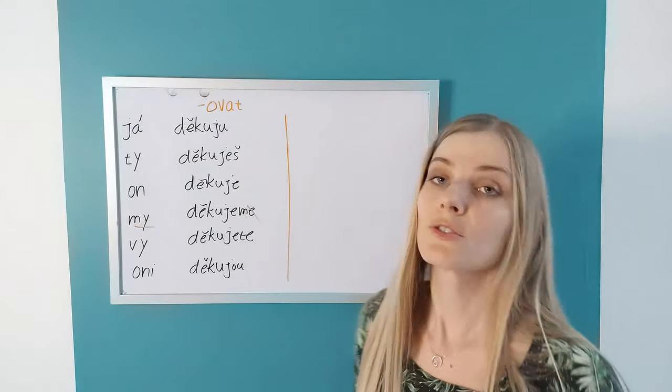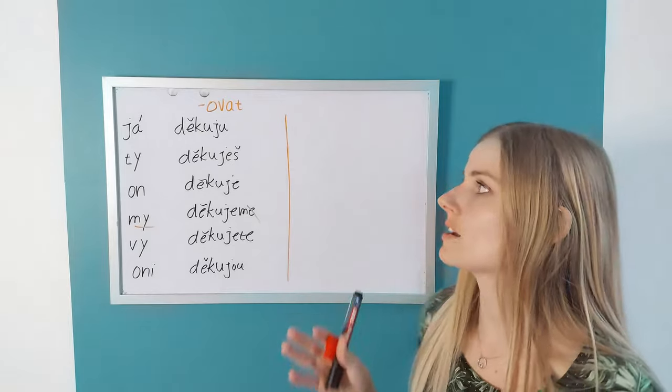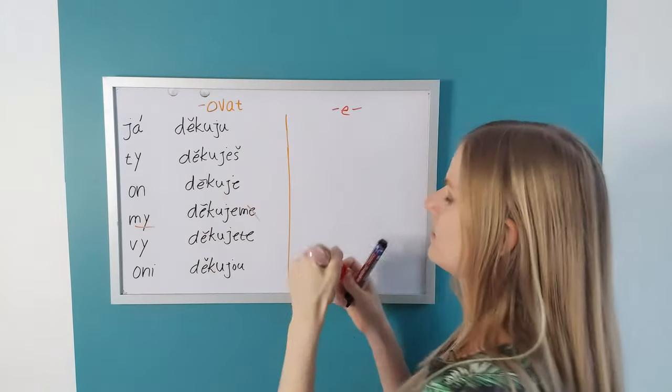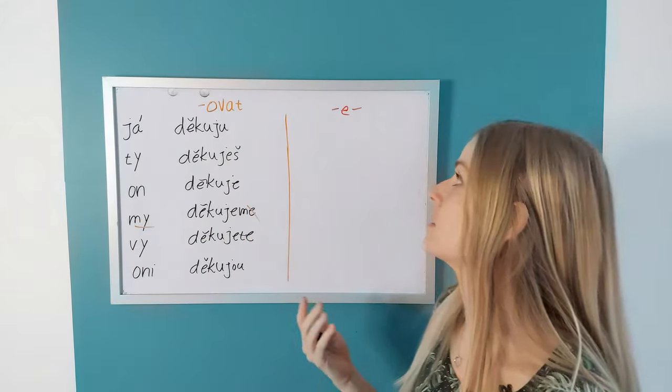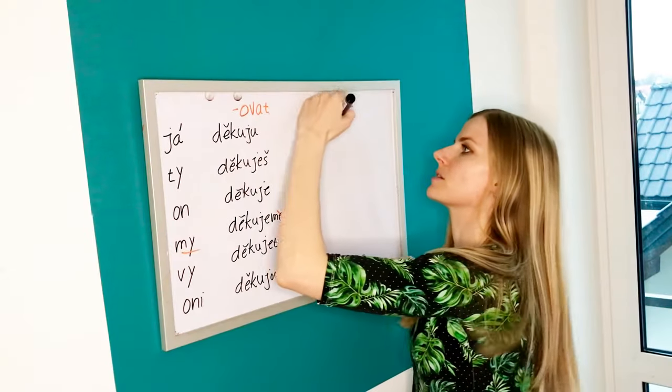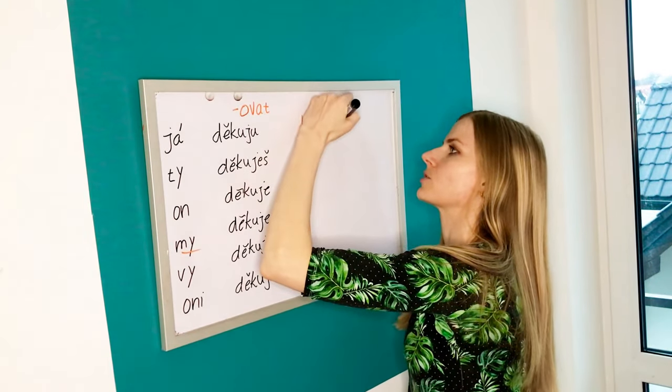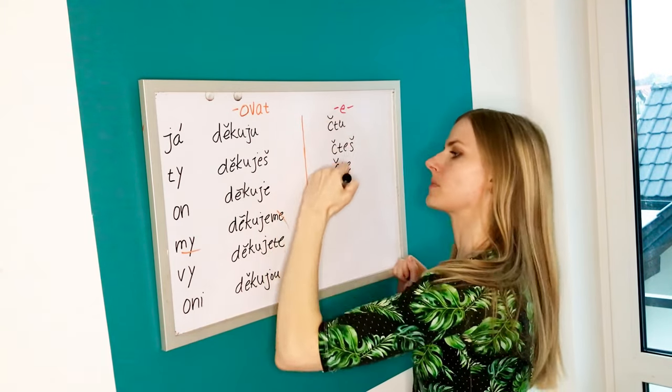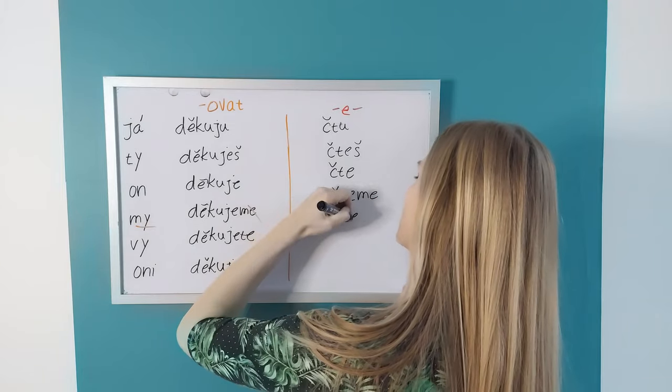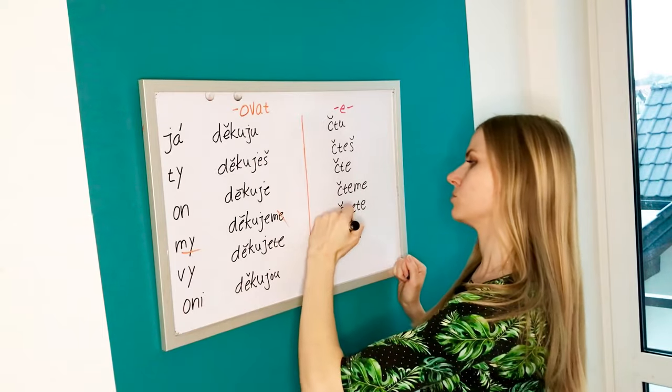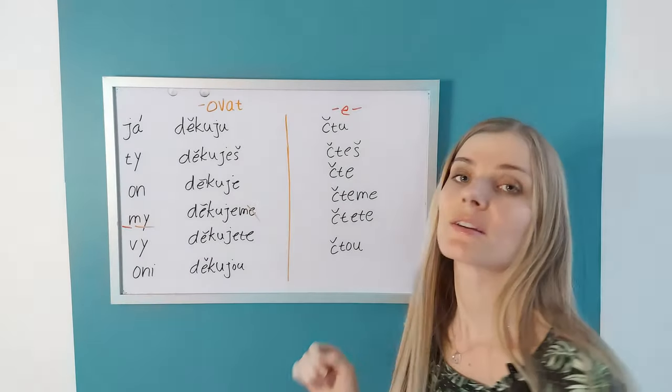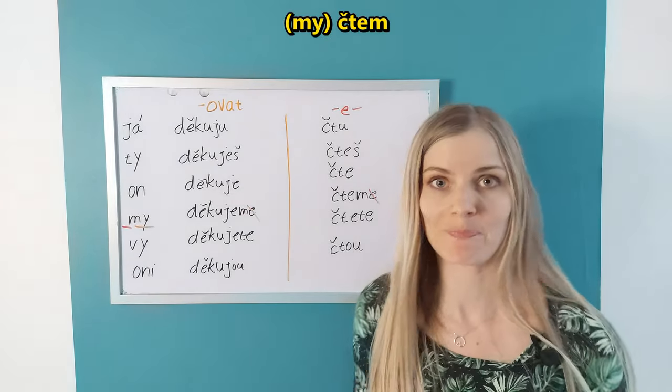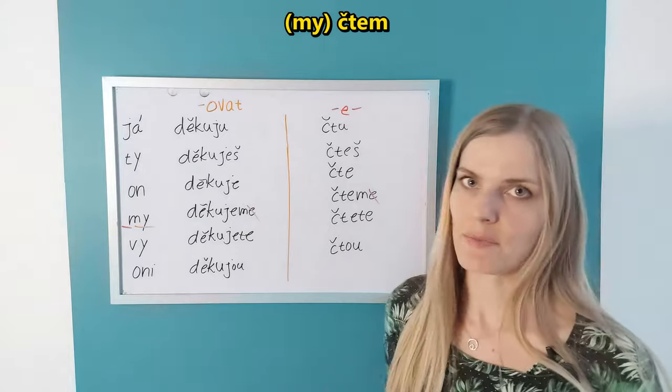And the last group which is usually full of irregular verbs. And I refer to it as the pink group or red group. It has a lot of letters E in it in the endings. Let's work with the verb číst to read. Again, the regular standard Czech. Já čtu, ty čteš, on, ona čte, my čteme, vy čtete, oni čtou. Guess what happened here? Also the pronoun my is affected. We can also drop the E here and we say čteme. So these two groups are exactly the same. My čteme.